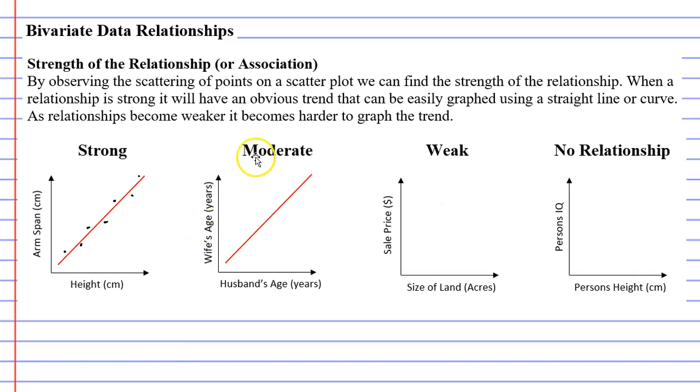When we get into our moderate and weak relationships, that's where we start seeing things deviate far from that line. So looking at our moderate relationship, if we're comparing a husband's age to his wife's age, you'll have some people that follow the trend quite nicely.